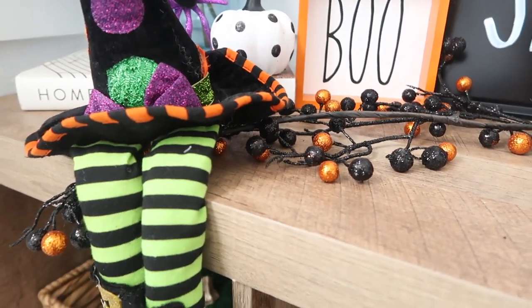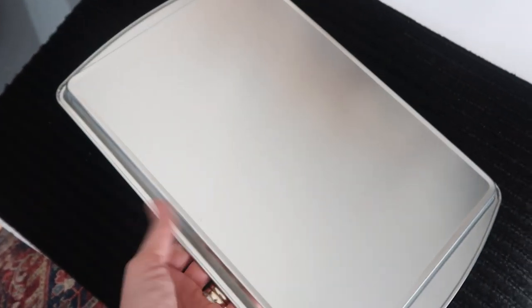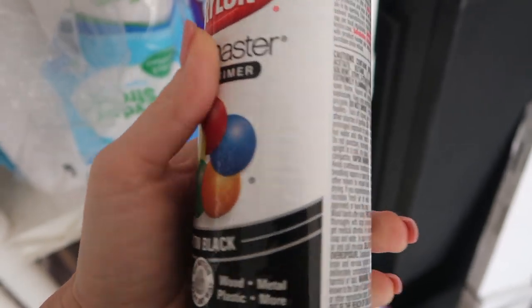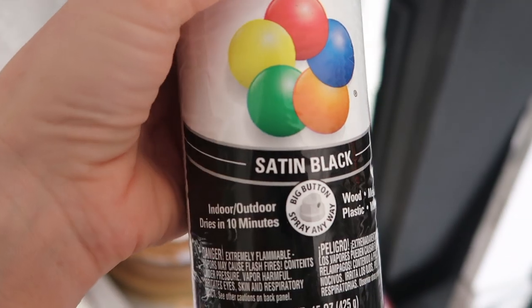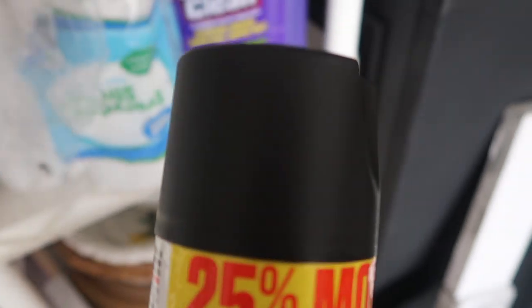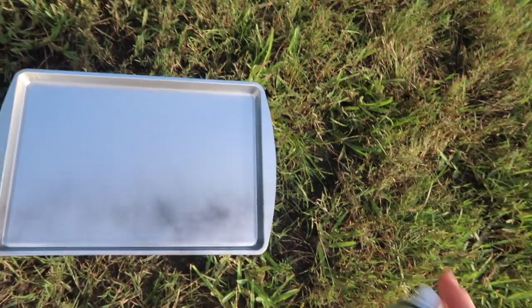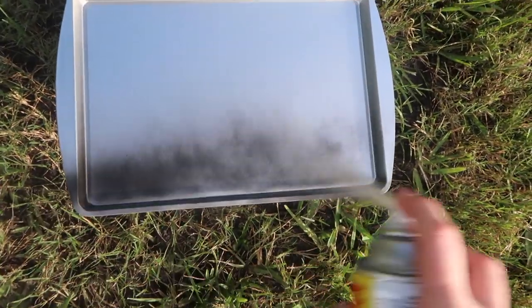For this DIY you will need one baking pan from the Dollar Tree. They always have these in stock, as well as some satin black spray paint. I am using the Krylon. You can use the dollar spray paint from Walmart. This is what I had on hand so I am going to use it.